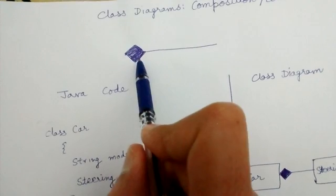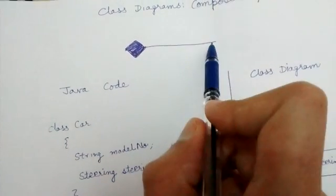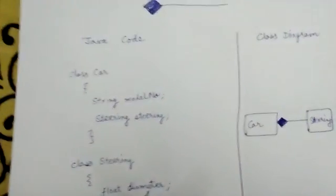This is represented by a kite which is completely shaded from inside and a straight line. Let's look at the Java code.